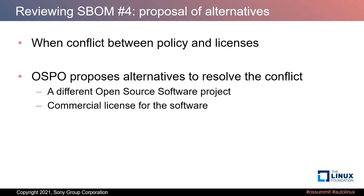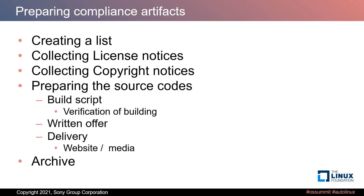When a conflict between policy and license occurs, OSPO tries to propose alternatives to resolve the conflict — for example, using a different open source software or a commercial license. To prepare compliance artifacts, we need to: create a list, collect license notices, collect copyright notices, prepare the source code including build scripts with verification of building, and prepare return offers. OSPO advises on delivery methods such as website disclosure or media delivery. Finally, compliance artifacts are archived.